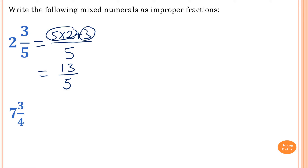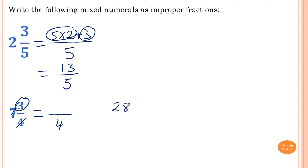Next, 7 and 3 quarters. The denominator is 4. So 4 times 7 is 28, and we add 3, which gives us 31. So the answer is 31 over 4.